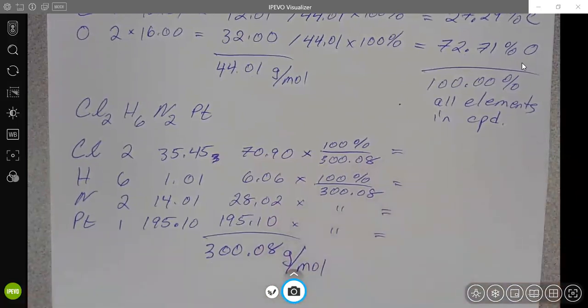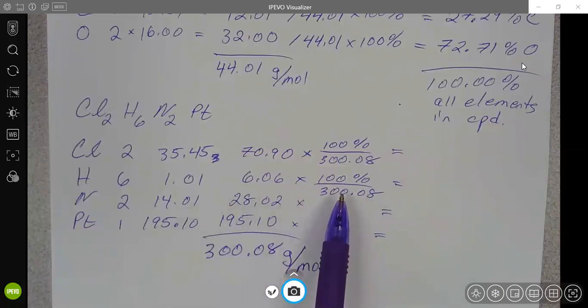Let's go ahead quickly and estimate what we would expect to see for our percents here. So notice the mass of the platinum is the largest mass in the compound. What would this be pretty close to if you rounded up to the hundreds? Hopefully you said it's close to 200. And if you think about taking 200 over 300, what does that mean we should get close to for our percent here?